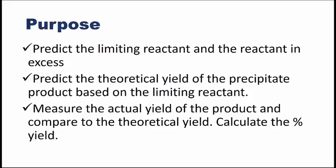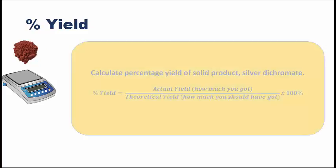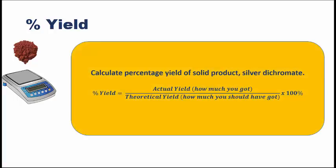You might recall the calculation for percentage yield. It's equal to the actual yield, which is how much you got, divided by the theoretical yield, how much you should have got, times by 100% to report that answer as a percentage.